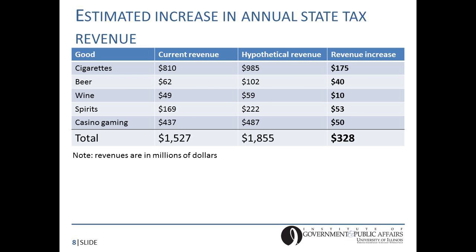Looking at the next table, this shows how much revenue I estimate the state could raise from each of these individual tax increases. I estimate that the 50-cent tax increase on a pack of cigarettes would increase the state's annual revenue by approximately $175 million per year. Totaling across all rows, I estimate that altogether these tax increases would increase annual state revenue by approximately $330 million per year.